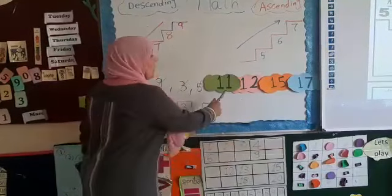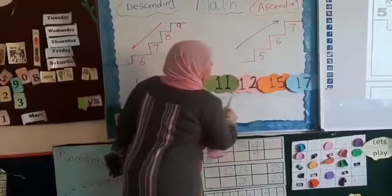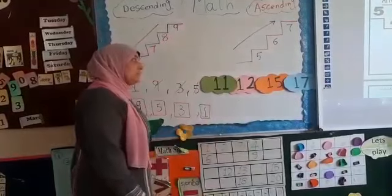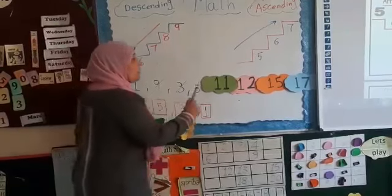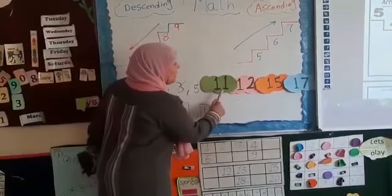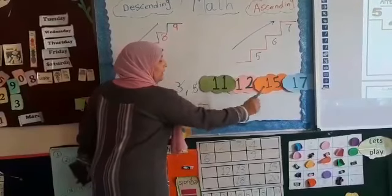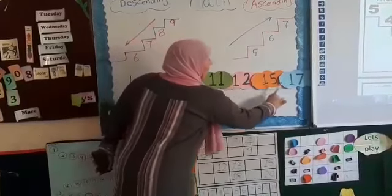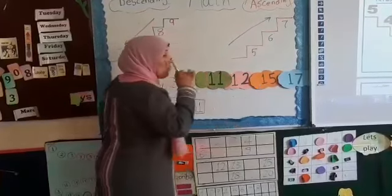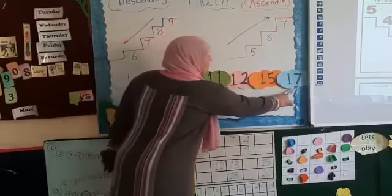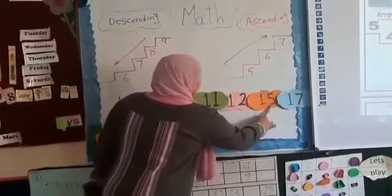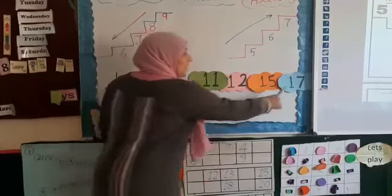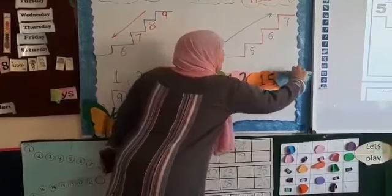KG2, here — can you tell me which is the biggest number here? Eleven, twelve, fifteen, or seventeen. Which is the biggest number? Look at me. The right is units, the left is tens. When the tens are the same — one, one, one, one — look at the units. Which is the biggest unit here — five, two, one, or seven? Seven. Excellent. We took seventeen — it's the biggest one.